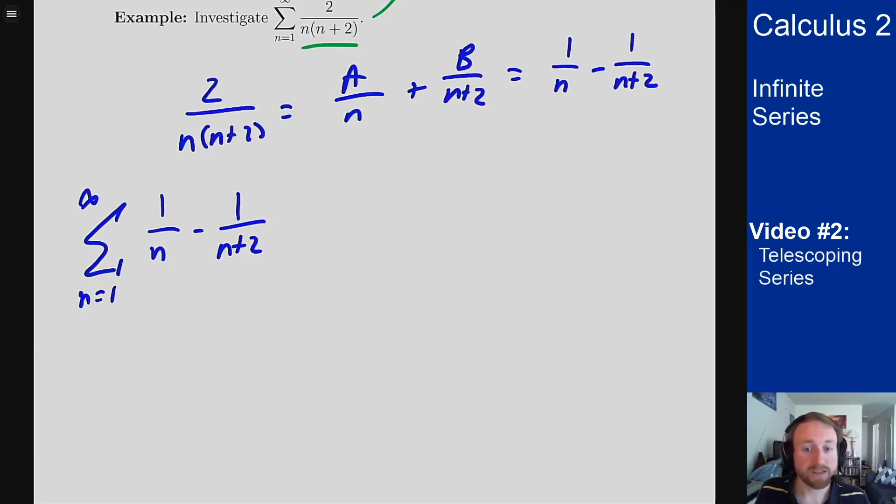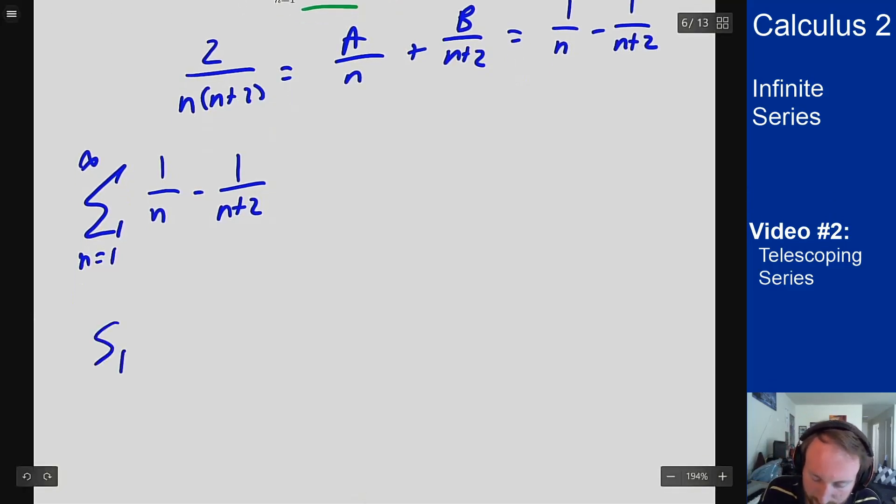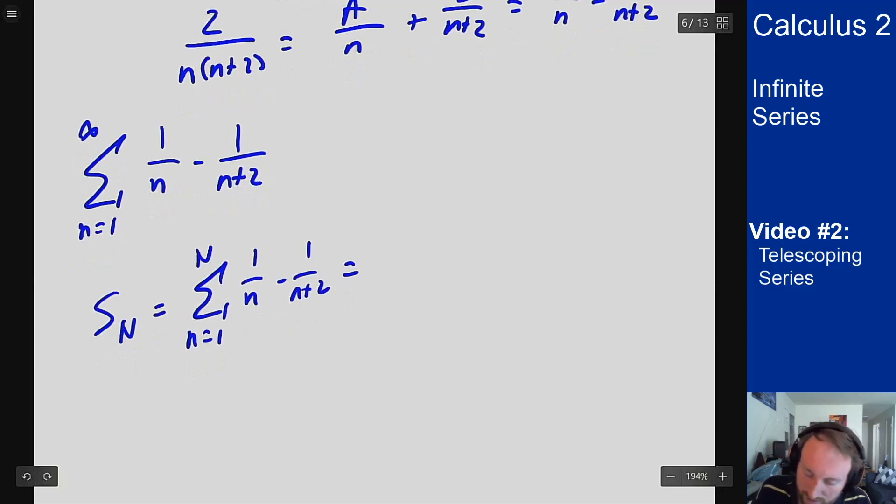Now to figure out if this series converges or what it converges to, I need to look at the partial sums. So my partial sum is the sum from N equals one up to capital N, one over N minus one over N plus two, and we can start writing this out. So for N equals one, I will get one minus one-third. For N equals two, I get one-half minus one-fourth because I'm plugging in two for N.